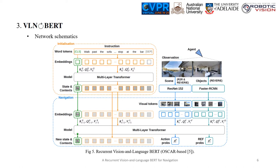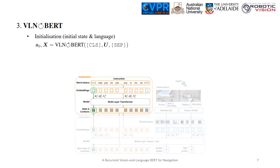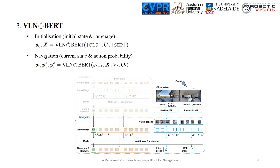Figure 5 shows our proposed OSCAR-based recurrent VLN BERT. At initialization, we pass the concatenated sequence of the classification token and the instruction to the transformer to obtain the initial state and the language representation. Then, at each navigation step, we feed the agent's previous state, the language representation, and the visual observations as input to the same transformer to get the updated state, the probability PAT for action, and POT for object grounding. Note that in navigation, the initial language is only applied as keys and values but not as query in self-attention, so that a large amount of memory can be saved during training.